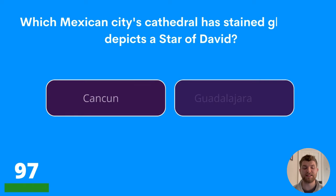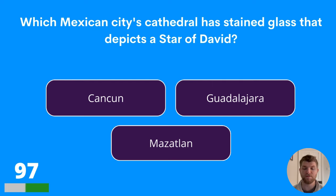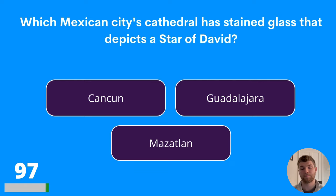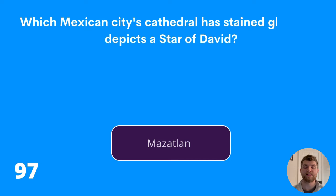Question ninety-seven: which Mexican city's cathedral has stained glass that depicts a Star of David? Cancún, Guadalajara, or Mazatlán? The answer is Mazatlán.